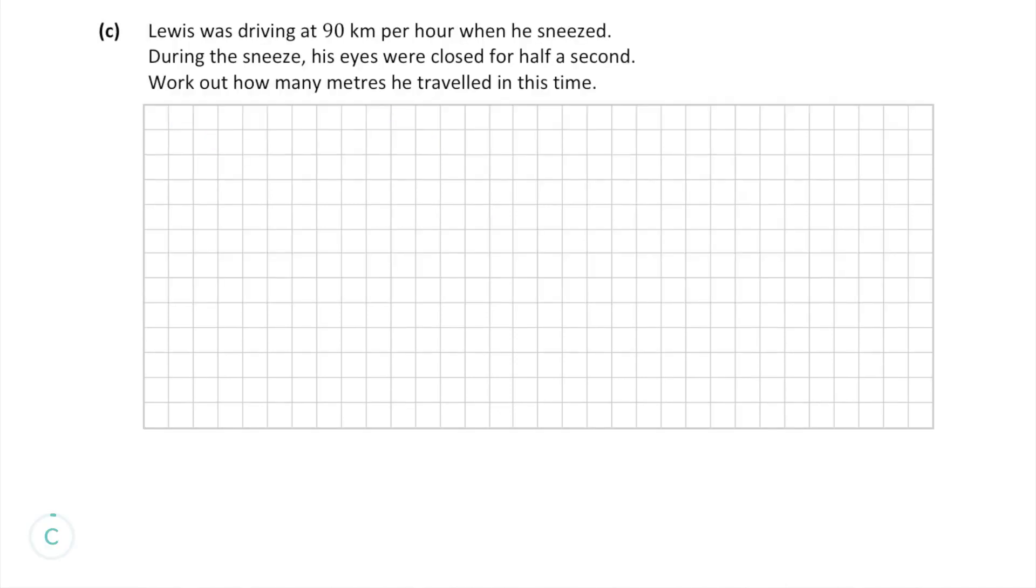In part C we are told that Lewis is driving 90 kilometers per hour and sneezes and when he sneezes his eyes are closed for a half a second. We have to work out how many meters he moved while his eyes were closed.